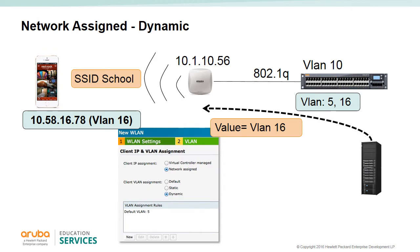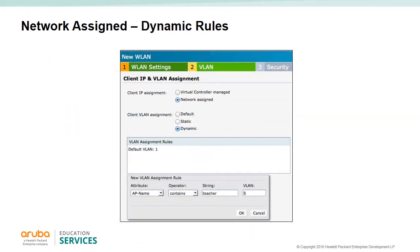If you select network assigned and dynamic, the VLAN is derived. The IAP is in its own subnet, and the administrator sets up VLAN derivation rules on the IAP. In this example, a user associating to the school SSID will fall into a VLAN based on rules configured on the IAP and what is returned from the server after authentication. A default VLAN may be set if no value is returned. For this to work, you must also configure the IAP switch with a trunk protocol and set up the same VLANs that will be derived.